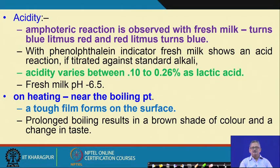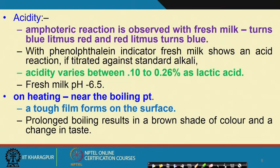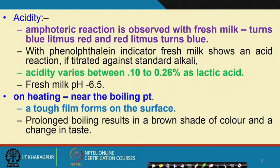Theoretically, both blue-to-red and red-to-blue litmus reactions are possible, but in all practical purposes milk is slightly acidic. With phenolphthalein indicator, fresh milk shows an acid reaction if titrated against standard alkali. So even though we call it amphoteric, in practical use it behaves as acidic.